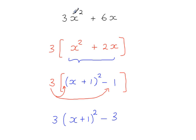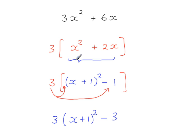I've essentially divided both of these terms by 3 to give these two terms here. And that 3 that I've divided by both of these, I'm multiplying by on the outside. At this stage, the two expressions are the same, because you have 3x squared, and 3 times 2x gives you 6x.